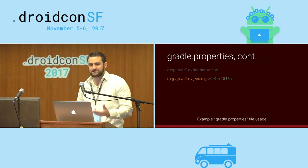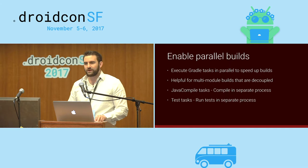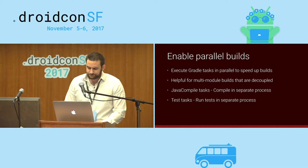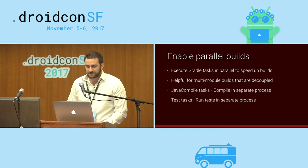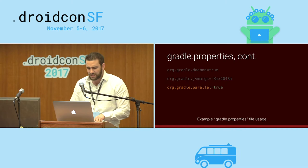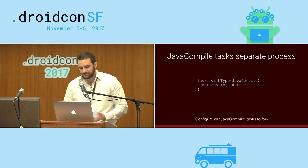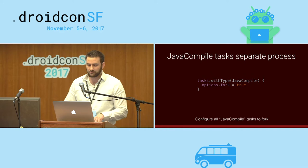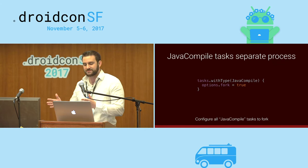Another easy win is simply turning on parallel builds. Parallel allows you to execute Gradle tasks in parallel, which is especially helpful for multi-module builds. If you can compile more than one project at the same time, we get through the project a lot faster. You can also kick out your Java compile tasks into separate processes using the fork option, and your test tasks into separate processes as well.